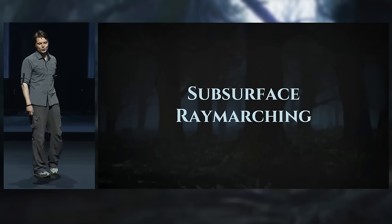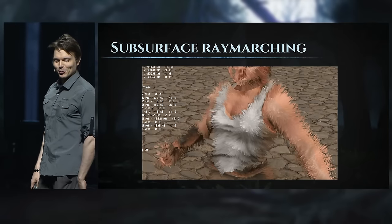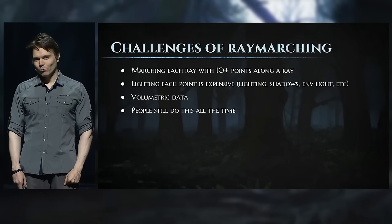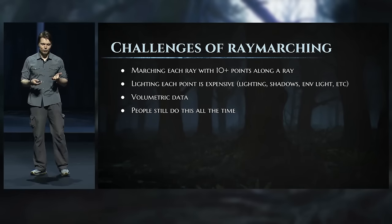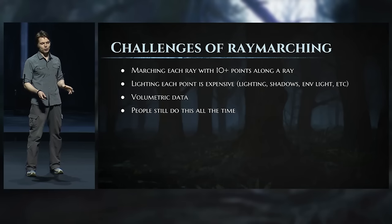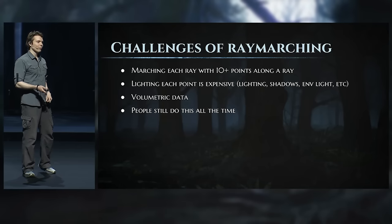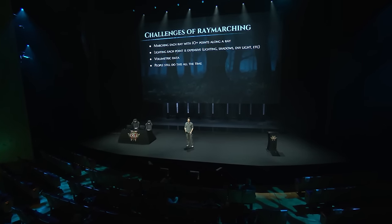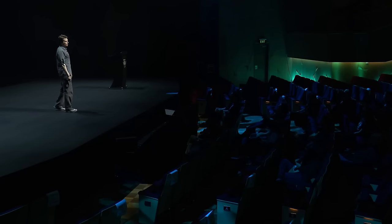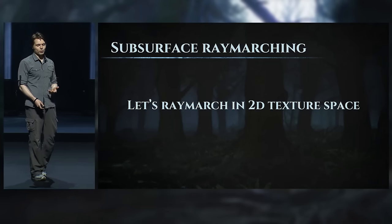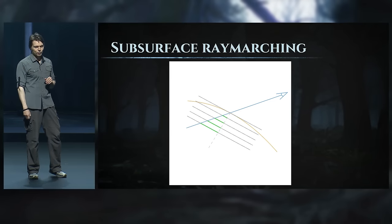The next technique I call subsurface ray marching. Ray marching is a process in computer graphics for rendering volumetric materials — when you have fog, water, or any material that transmits rather than blocks light entirely. The challenge is that it involves a loop where you need to calculate lighting for every step of your ray, which is typically very expensive. But what if we ray march in texture space instead? Then we don't need to store actual 3D volume data — we can use a single 2D texture and derive multiple layers from it.